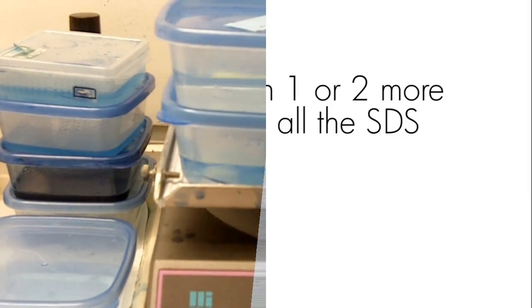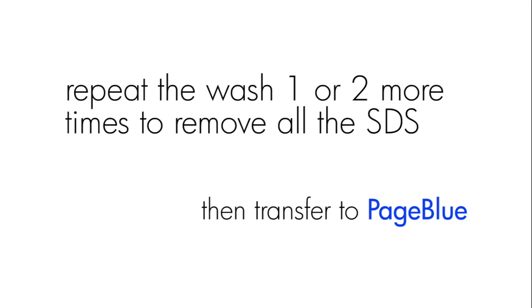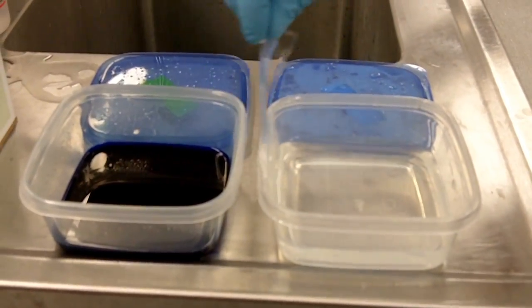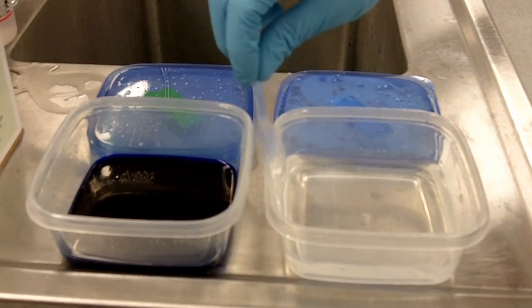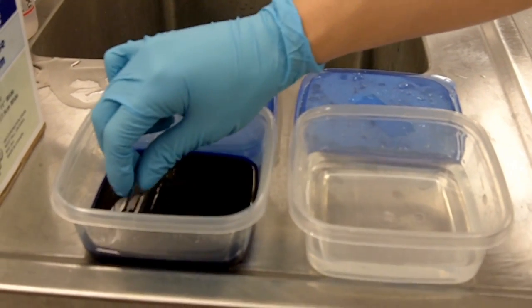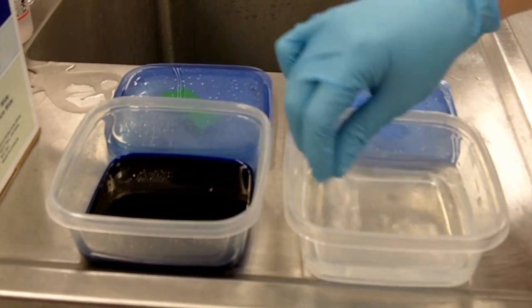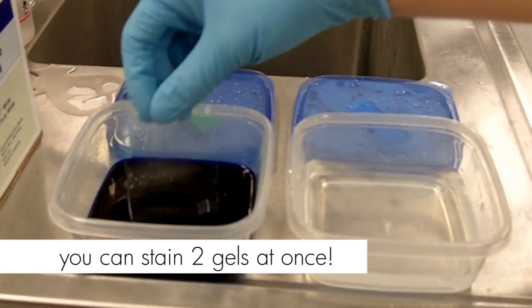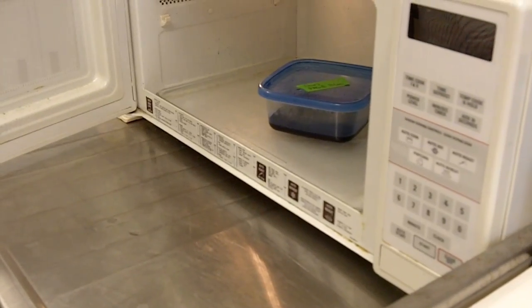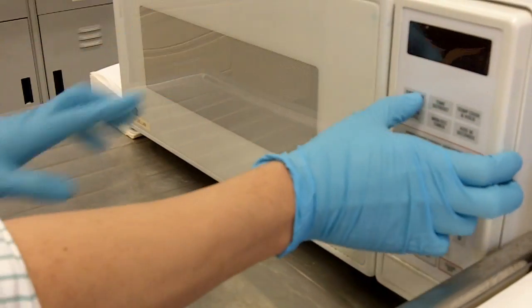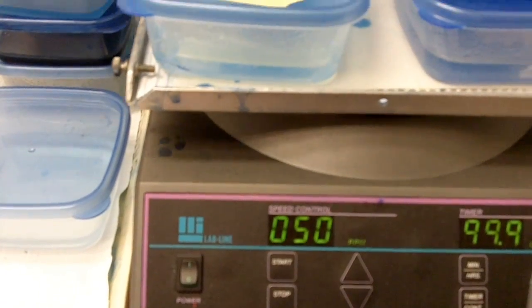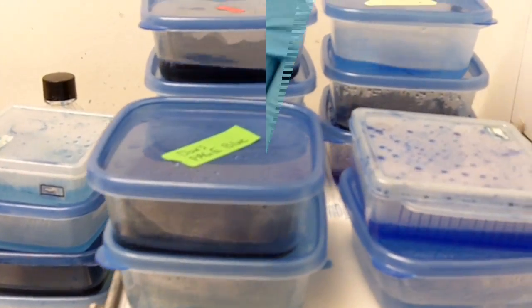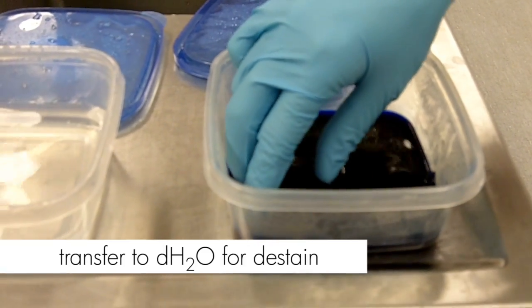Before we transfer the gel, we want to make sure we remove excess water because we would not want to dilute the dye. We will microwave this for about 30 seconds. By heating it up again, this helps the dye to be absorbed into the gel, and we'll let it shake on the shaker for about 10 minutes. You can shake it longer if your dye is not as fresh.